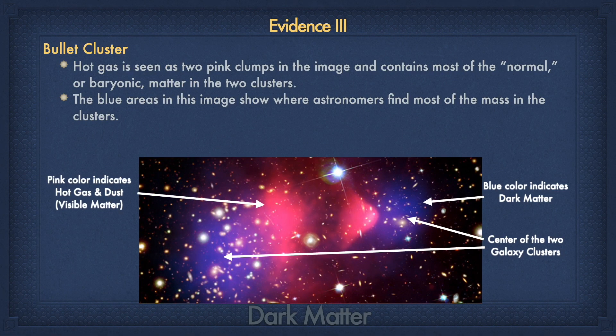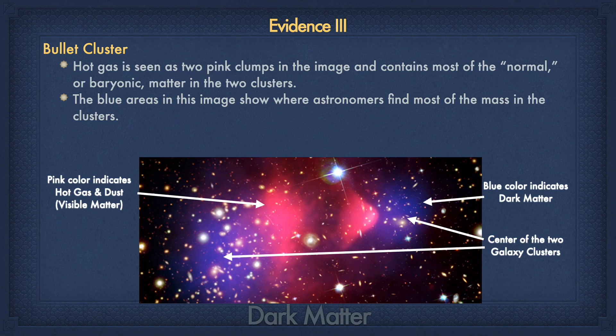The third evidence of dark matter is the bullet cluster — a cluster formed by the collision between two clusters of galaxies. On the screen you can see the state of the bullet cluster after the collision. The pink color indicates the visible matter; the blue color shows the high gravity areas where dark matter is present. After the collision, the dark matter area shown in blue moved ahead because it did not slow down due to the impact, while the pink regions contain normal visible matter. The far-away galaxies appearing in the blue region have become hazy due to gravitational lensing, proving the existence of dark matter in the blue regions.